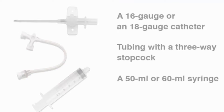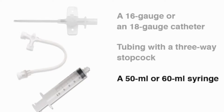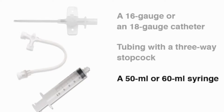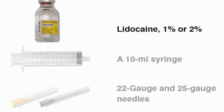Begin by gathering the necessary equipment. The equipment needed for aspiration includes a 16-gauge or 18-gauge over-the-needle catheter, tubing with a three-way stopcock, and a 50-milliliter or 60-milliliter syringe. To administer local anesthesia, you will need 1% or 2% lidocaine, a 10-milliliter syringe, and 22-gauge or 25-gauge needles.